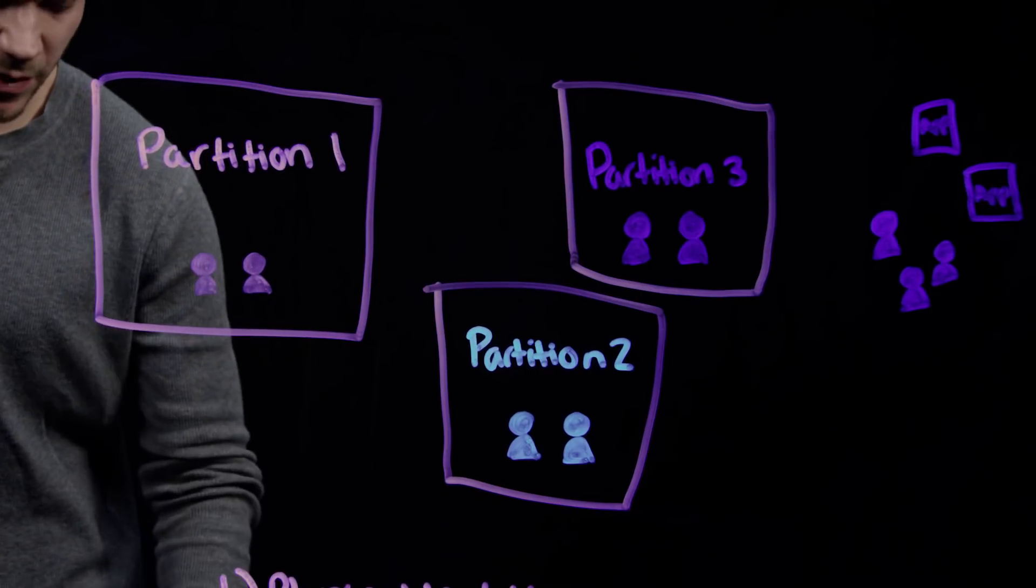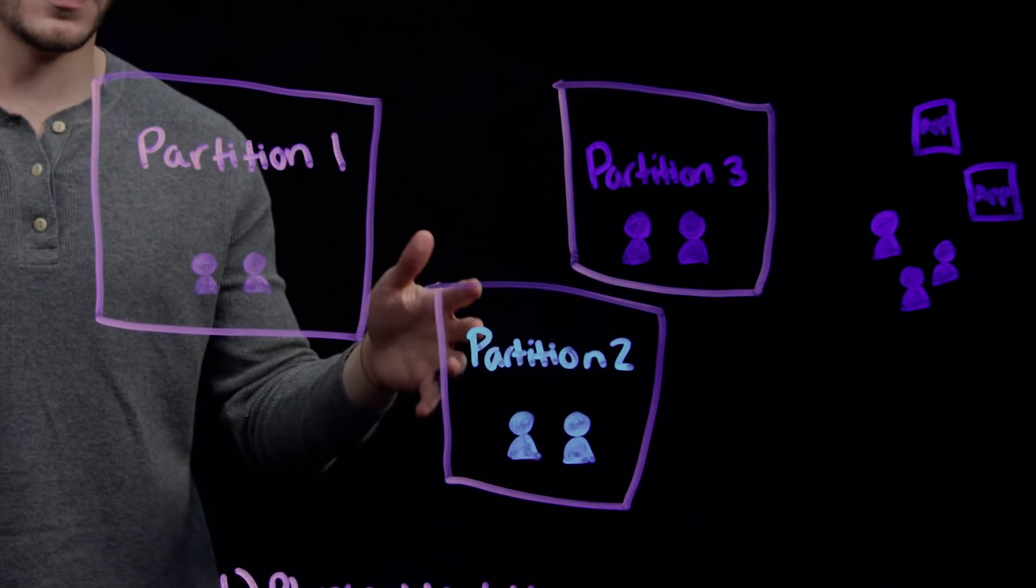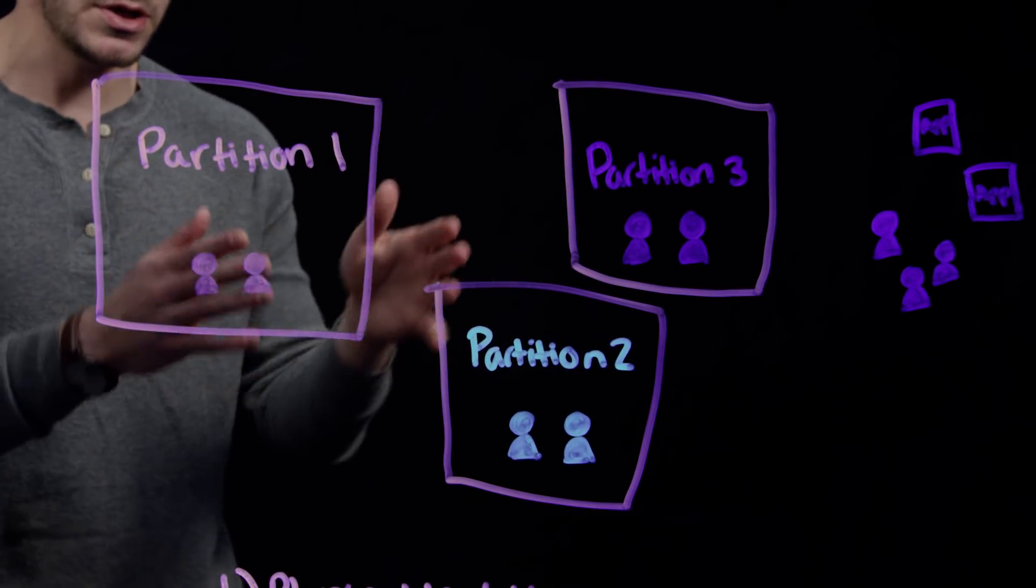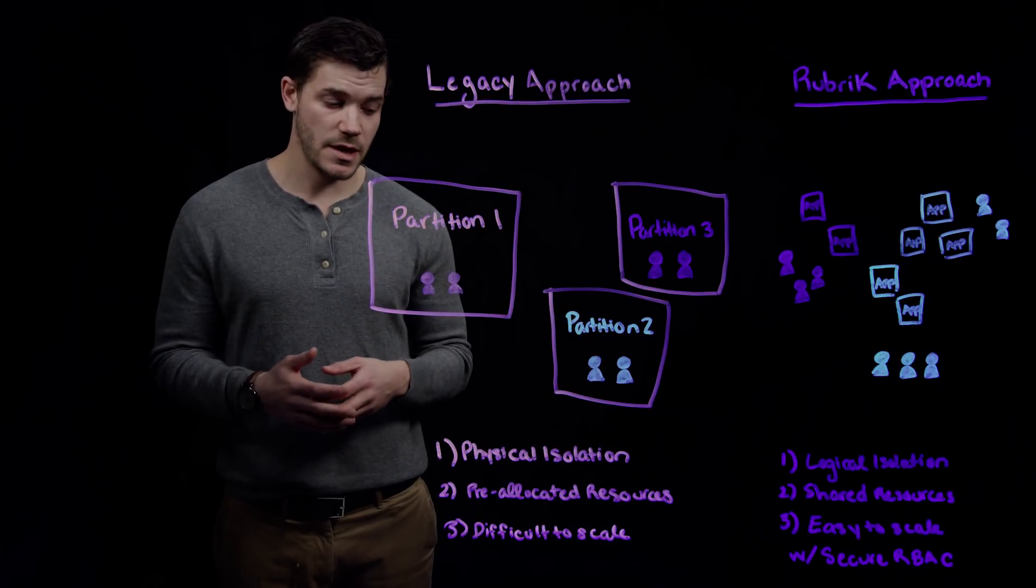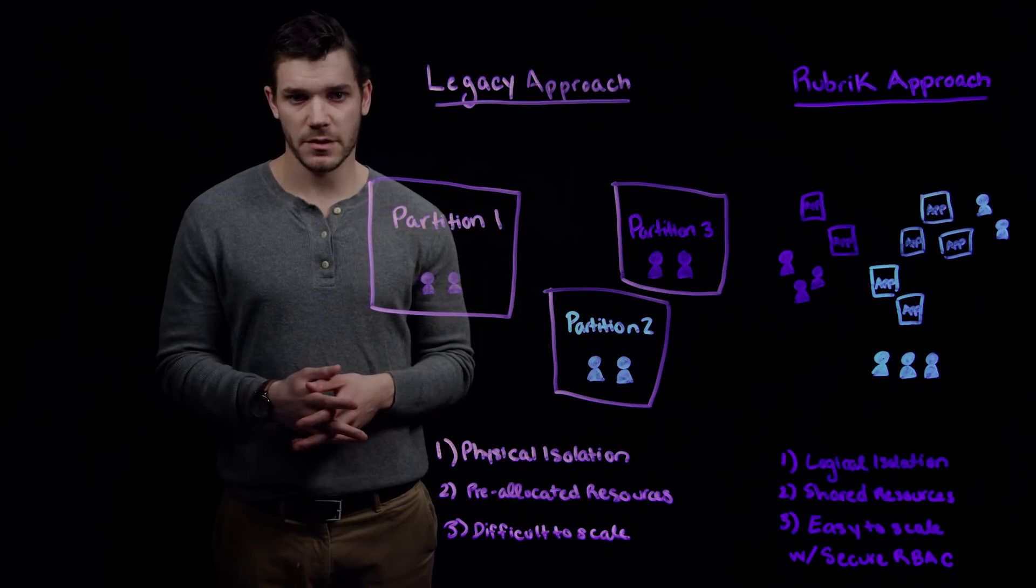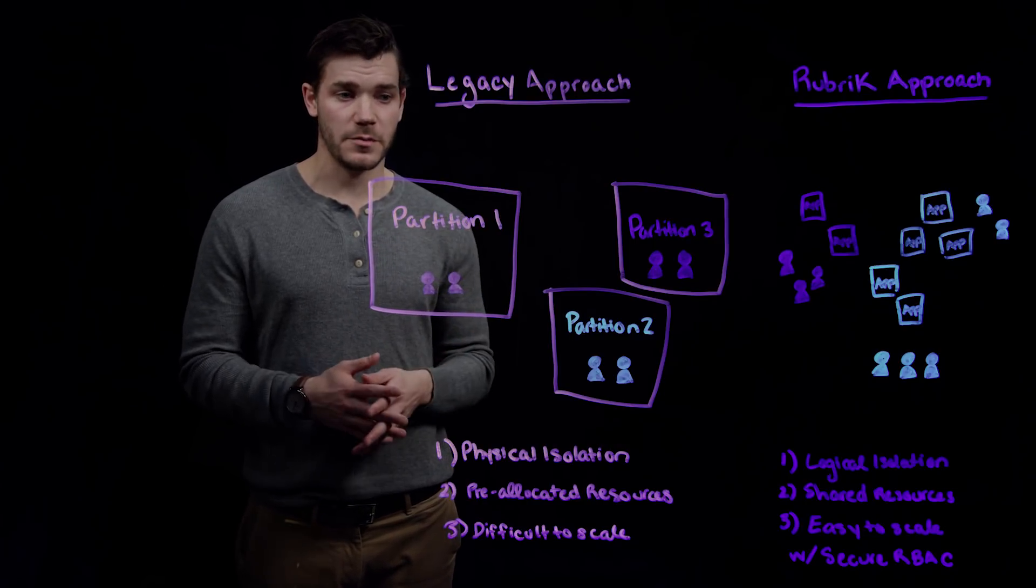As we can see, we've divided our physical environment into three isolated chunks. This approach can lead to over-provisioned resources and make it very difficult to scale, especially when you're operating with cloud environments.